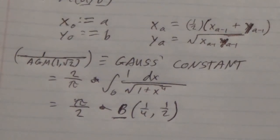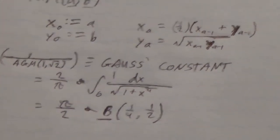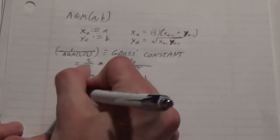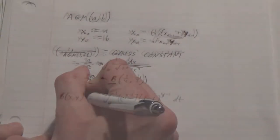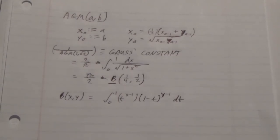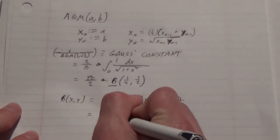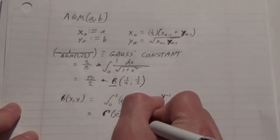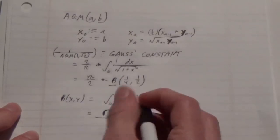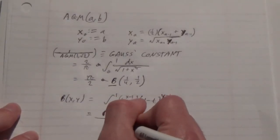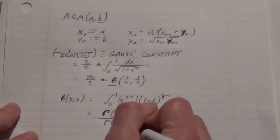But, more generally, what this beta function is, is basically this formula given right here. And it can be generalized to the gamma of x times gamma y all over the gamma of x comma y.